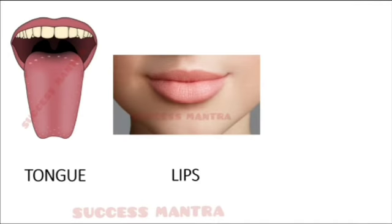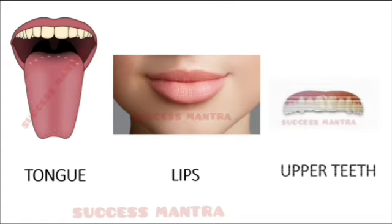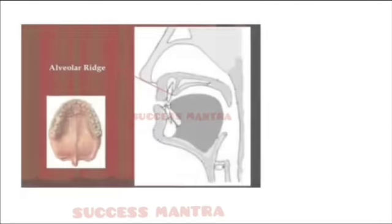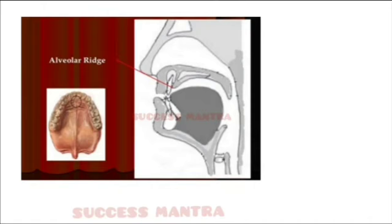The movement of the lips is also a reason for the production of speech sounds, as are the upper teeth. The alveolar ridge is present either on the roof of the mouth between the upper teeth and the hard palate, or on the bottom of the mouth behind the lower teeth, as shown in this image.